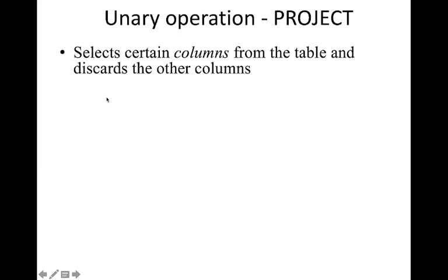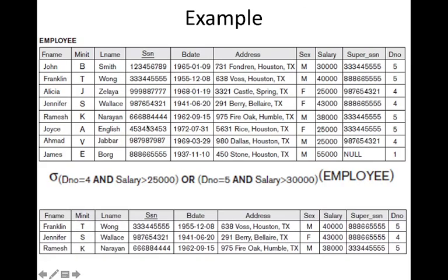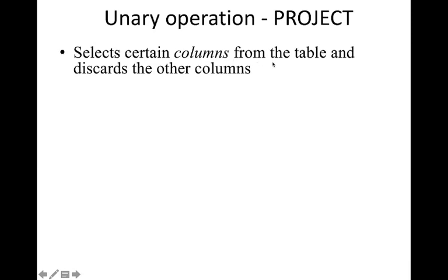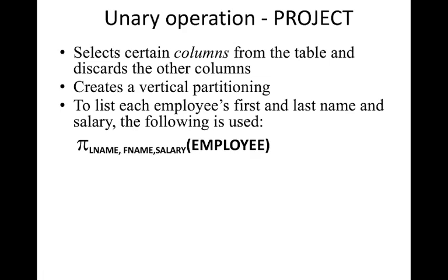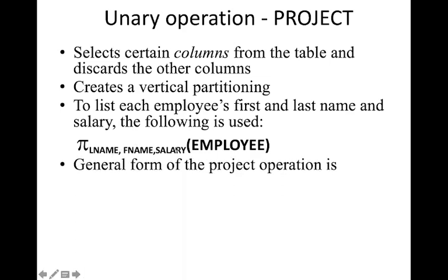The next operation is projection. While select operation picks certain rows, projection is used to select certain columns from the table and discard other columns — it is called vertical partitioning. For example, to list each employee's first name, last name, and salary, we use PI — the symbol for project operation: PI(last_name, first_name, salary)(employee). The result is a table with only those three columns.